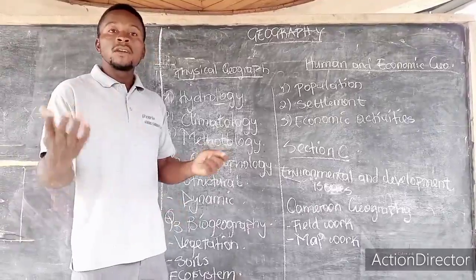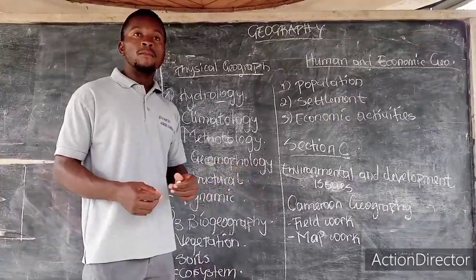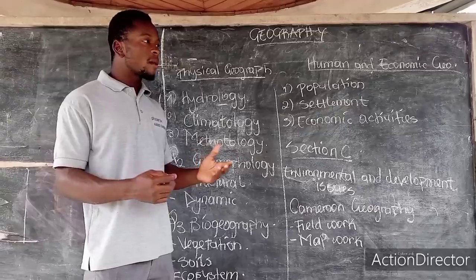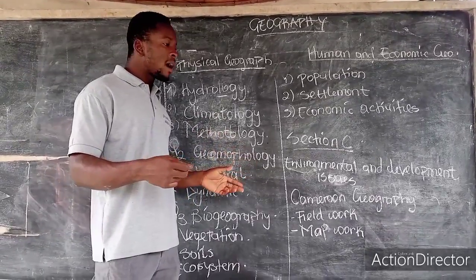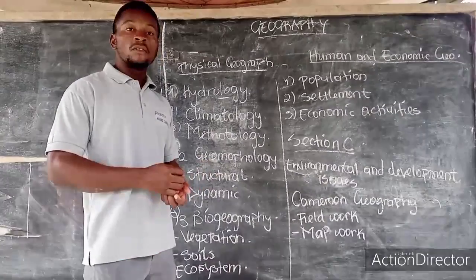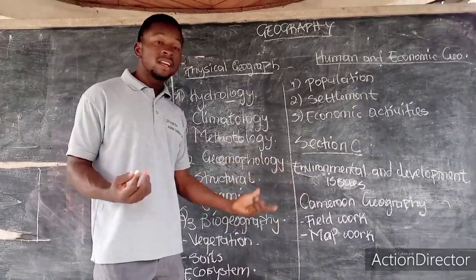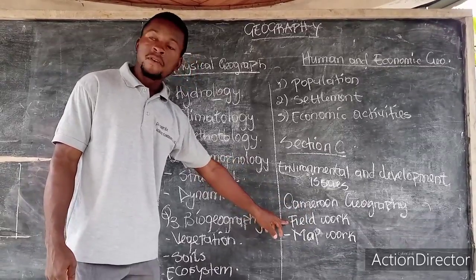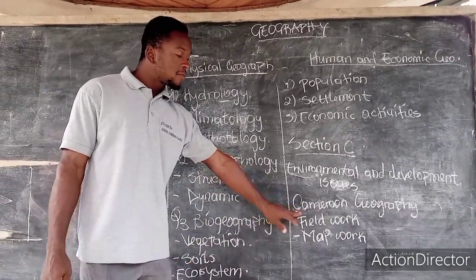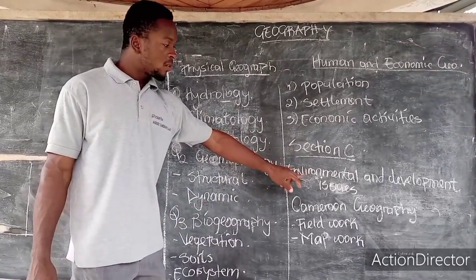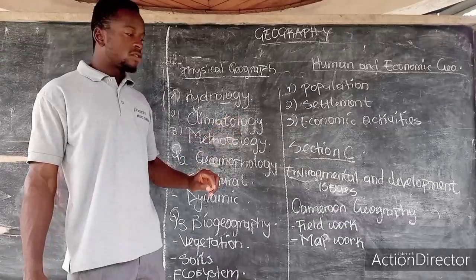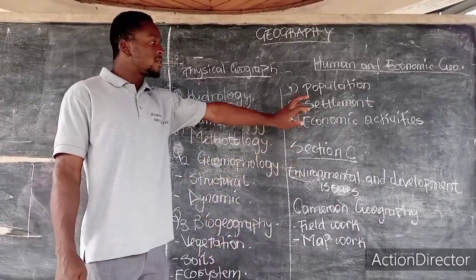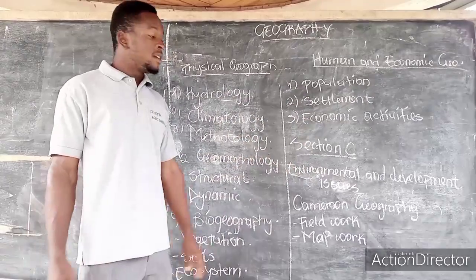On the other part, we have common geography. They can give you a map to arrange features, draw, and comment on them, or ask you to locate places like Bamenda on a map. In Paper 3 you answer four questions: two from common geography, one from fieldtrip, and one from map work. In Paper 2 you pick four questions — one from Section A physical geography, one from Section B human and economic, and one from Section E environmental and development.